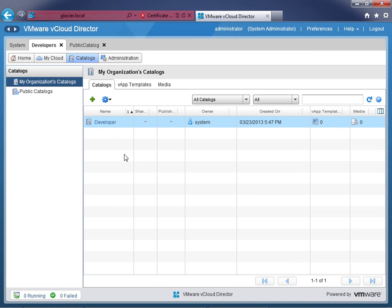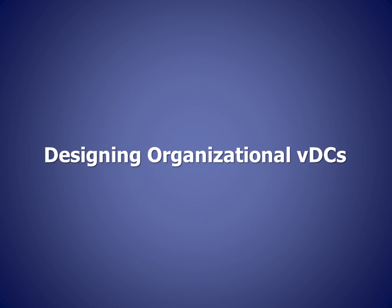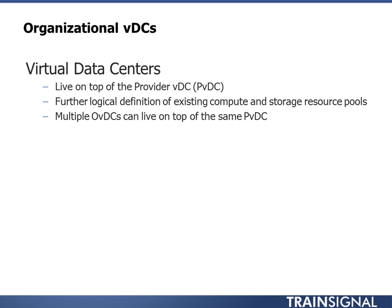Now let's move on to organizational VDCs. An organizational VDC is a virtual data center that lives on top of the provider VDC. The provider VDC defines what hosts are being used, what compute, how storage is connected — the building blocks and resource pools. An organizational VDC extrapolates further, logically defining those resources into slices that organizations can use. Multiple organization VDCs can live on top of the same provider VDC — one large provider VDC sliced into smaller org VDCs handed out to different organizations.